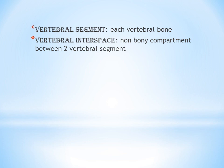Next, you have two terms: vertebral segment and vertebral interspace. You need to understand these before going to the codes. A vertebral segment is each individual bone of the vertebral column — for example, C1 is a vertebral segment, C2 is another, C3 is another. A vertebral interspace is the non-bony compartment between two vertebral segments, that is, the space between two vertebral bones.